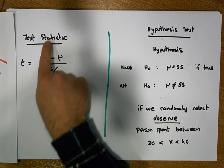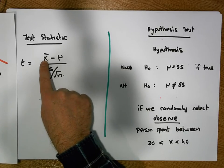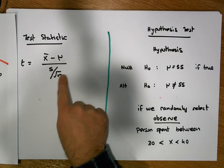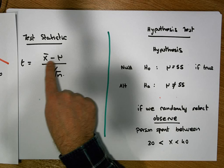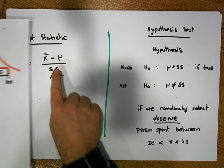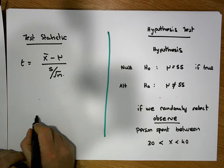So our test statistic calculates how far our distribution is, our hypothesized distribution is away from our evidence, and it calculates that in standard units. So the larger the test statistic, the larger the test statistic, the more evidence to suggest that we're in the tails of the distribution.